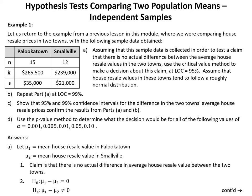Part B asks us to repeat Part A for LOC equal to 99%. In Part C, we show that 95% and 99% confidence intervals for the difference in the two towns' average house resale prices confirm the results from Parts A and B. In Part D, we use the p-value method to determine the decision for alpha values of 0.001, 0.005, 0.01, 0.05, and 0.10.